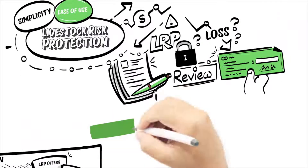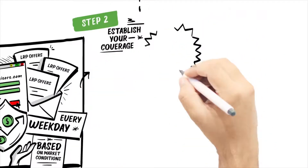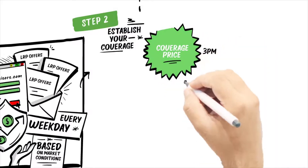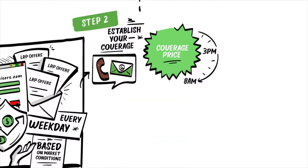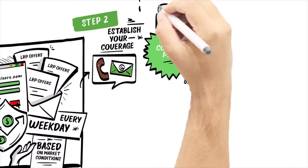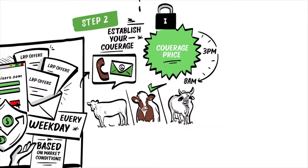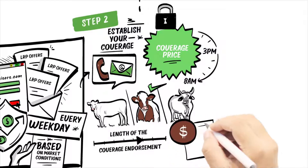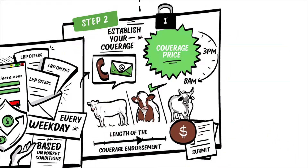Next you can establish your coverage. Weekday LRP offers are available, and when you see a coverage price which meets your needs, you'll have from between 3 p.m. Mountain Time and 8 a.m. Mountain Time the following morning to contact your Ag Risk Advisor and lock in coverage. Your advisor will confirm the type of cattle you plan to insure, the length of the coverage endorsement, coverage price, and other items before submitting the specific coverage endorsement on your behalf.